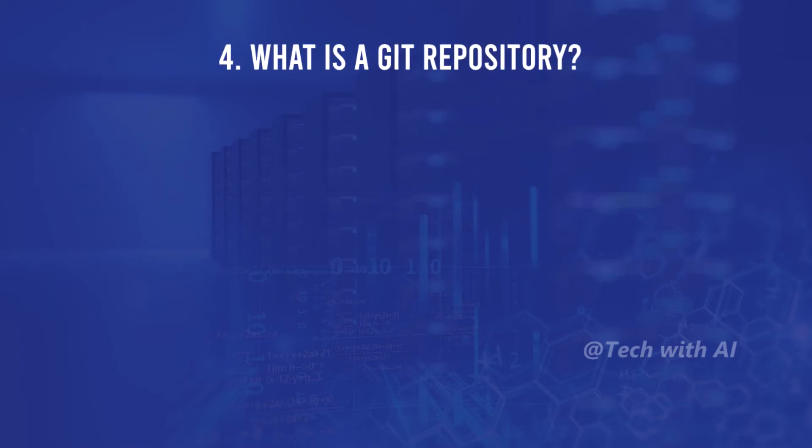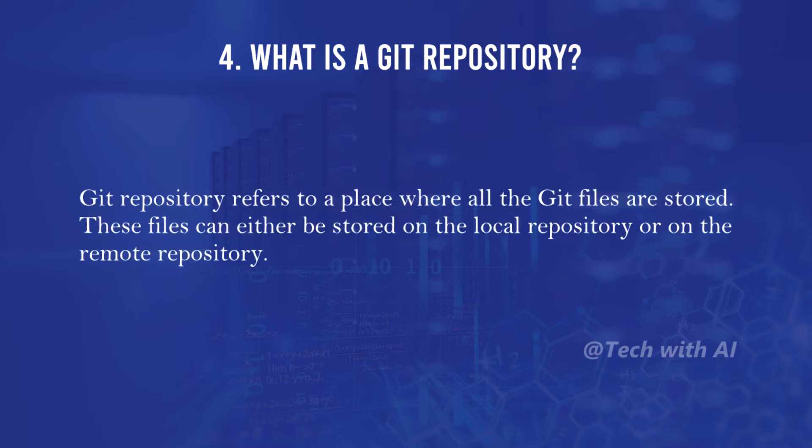What is a Git repository? A Git repository refers to a place where all the Git files are stored. These files can either be stored on the local repository or on the remote repository.